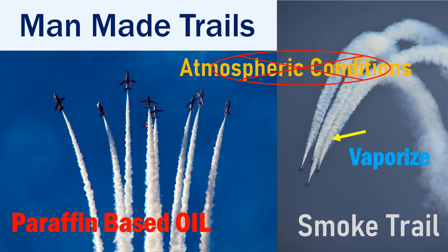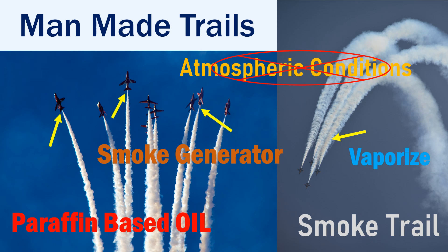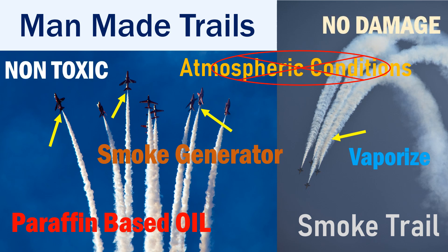Another method is to use a separate smoke generator that will create the smoke trail through different nozzles at the trailing edge of the aircraft. The oil used should be non-toxic and should not cause damage to the aircraft or affect the pilots or the audience. The smoke created also gives a visual idea to the pilots about other aircraft's trajectory and can assist them in making corrections as required.